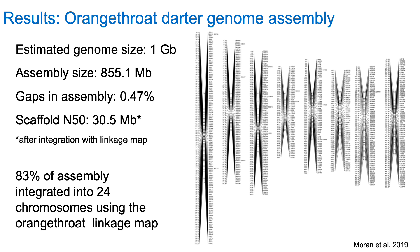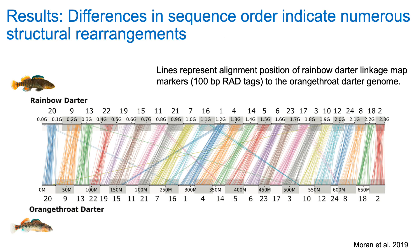We ended up with a very nice reference genome with 83% of the assembly integrated into 24 chromosomes using the orange-throat darter linkage map. Here I'm showing the results of the synteny comparison between rainbow and orange-throat darter genomes. Each line represents the alignment position of rainbow darter linkage map markers — 100 base pair RAD tags — to the orange-throat darter genome. Each of the 24 linkage groups is color-coded; translocations are evident as lines that branch between different linkage groups, and inversions can be identified by differences in marker order within linkage groups. There were numerous inversions and translocations evident across the genome, which we expected based on previous studies of chromosome morphology.